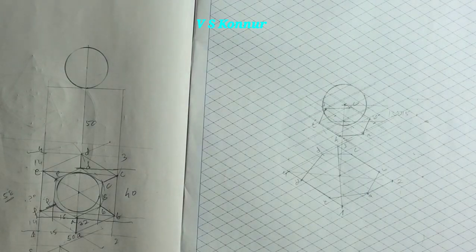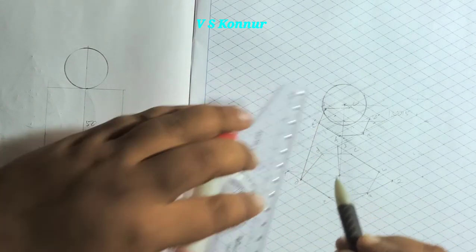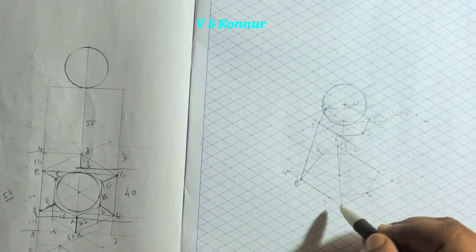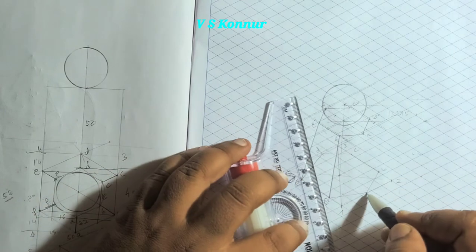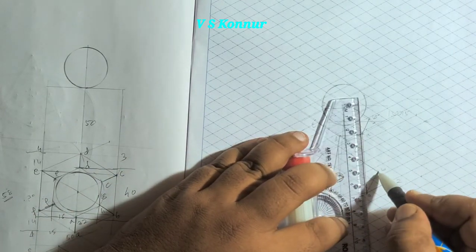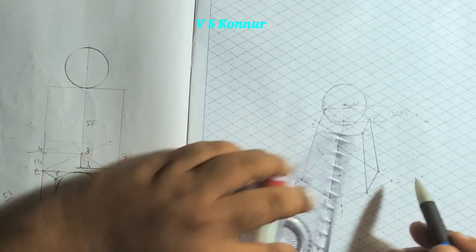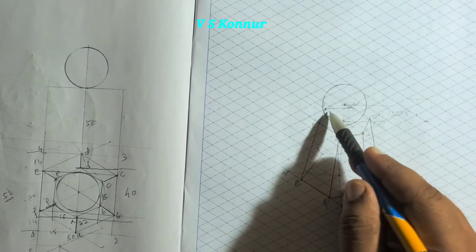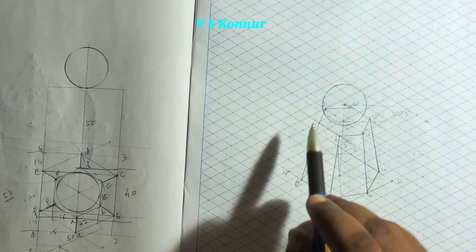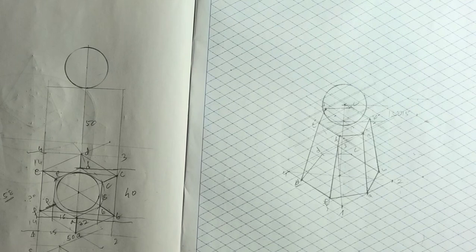The sphere parts which are invisible — don't make any lines dark. For the visible lines: D to E, E to E, F to F, A to A, then B to B — which are visible lines, so make them dark. This face inside — which is not visible — don't make any lines dark inside. But this part is visible. This is how we have to draw a sphere resting at the top of the frustum of a hexagonal pyramid.